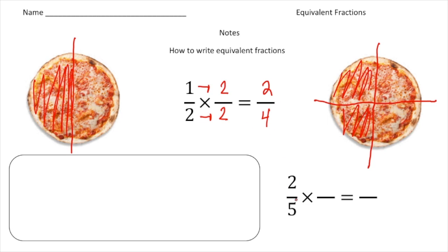Let's do another one. Here we have two fifths. I'm going to multiply both the two and the five by a common factor of ten. So I multiply the two by ten and also the five by ten: two times ten is 20, and five times ten is 50. So it's 20 fiftieths.